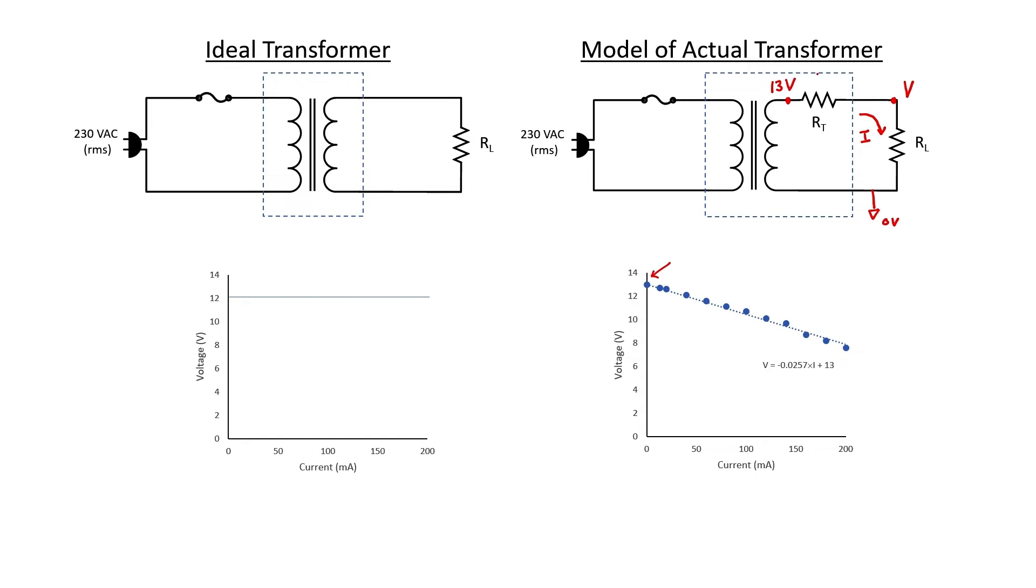If I apply Ohm's law to this resistor, I get the following equation. V equals IR. If I rearrange the terms, I get V equals minus RT times the current plus 13. If I compare it to the equation of my trend line, I can identify the value for RT. The unit here is kiloohms, so let's convert it to ohms. What I found here is a mathematical model to represent my realistic transformer.